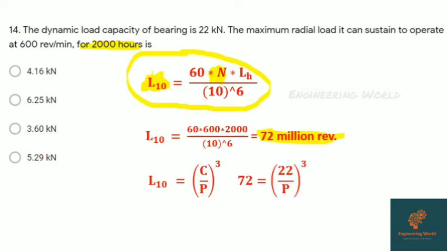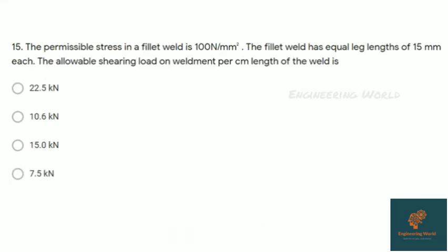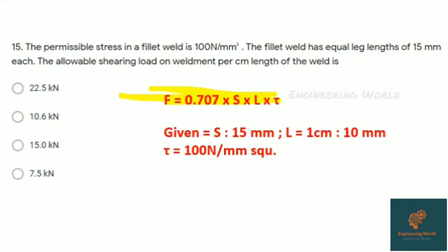Question fifteen: The permissible stress in fillet weld is 100 N/mm². The fillet weld has equal leg length of 15 mm each. Allowable shearing load per centimeter length of the weld is... The formula is F equals 0.707 × S × L × τ. Given leg length is 15 mm, L is 1 cm, that is 10 mm, and τ given is 100 N/mm². By putting values in the equation, we get 10.6 kN. Just simple. All machine design problems are just formula-based.